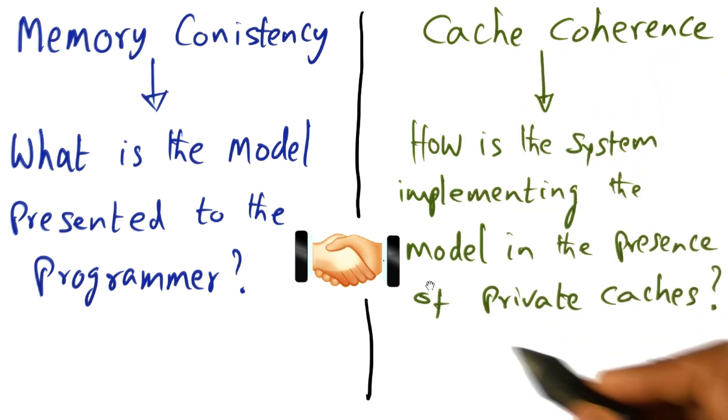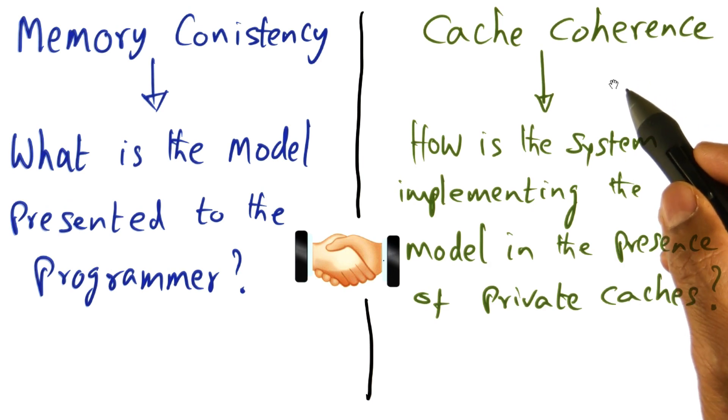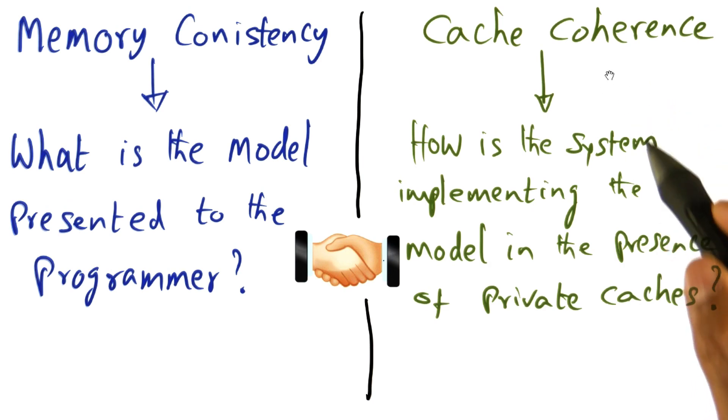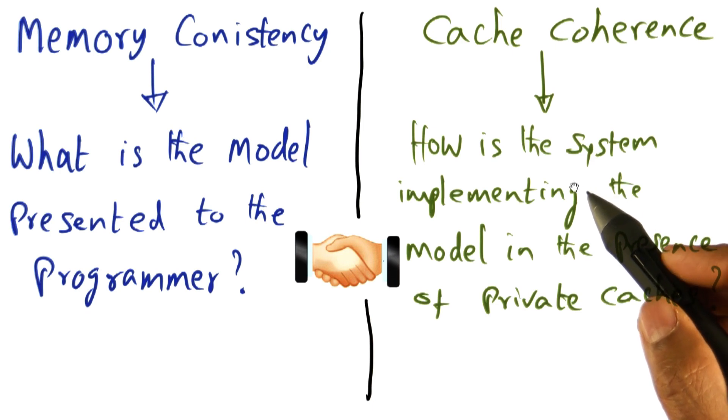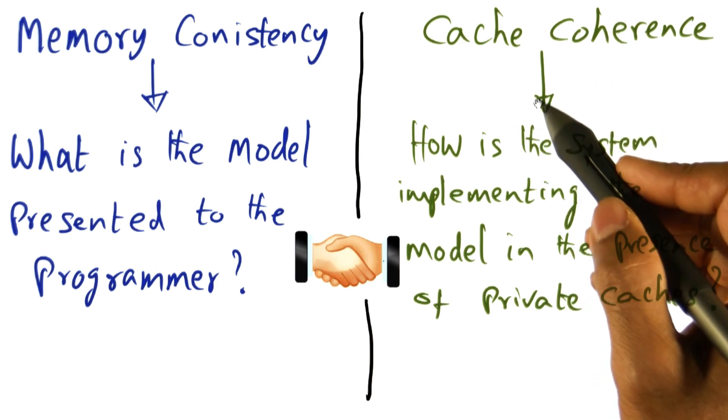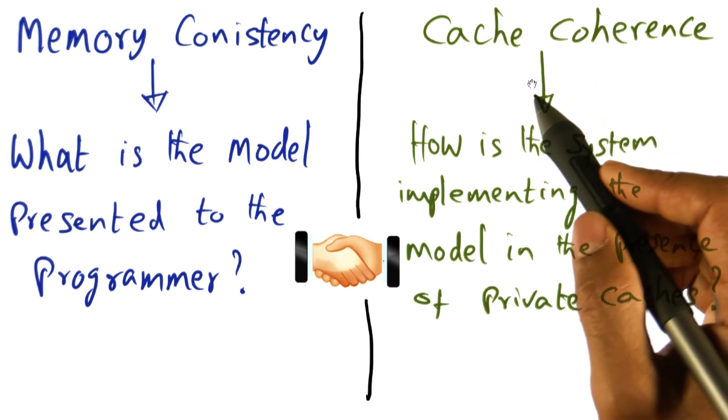And the system implementation of cache coherence is itself a hardware-software trade-off. Now, for instance, one possibility is that the hardware is only giving shared address space.